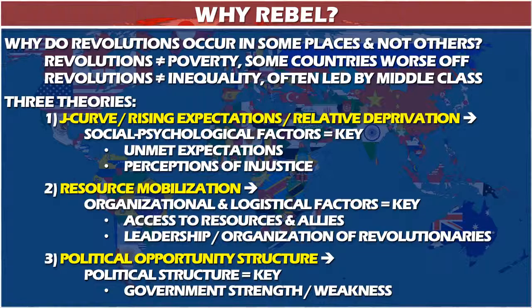The second theory looks at the rebels and revolutionary groups — their organization, resources, and leadership. Some groups are better organized with better leadership and can successfully organize a revolution. There are big differences between societies in how well revolutionaries are organized. Do they have resources and allies? They need a leadership structure, the ability to feed people — since being a revolutionary is not a paying job — and in some cases weapons and training. In Russia, the Bolsheviks were very well organized. Philip Selznick's book The Organizational Weapon explains how the Bolsheviks organized to turn out the people and project far more power than their numbers suggested.